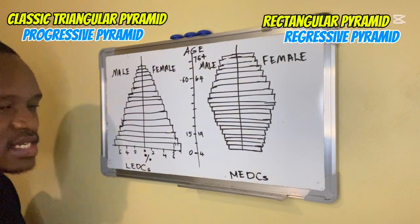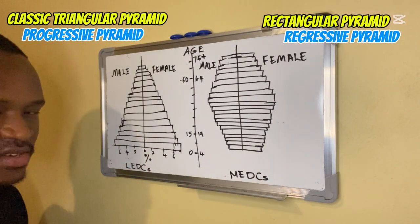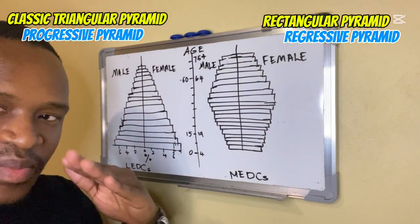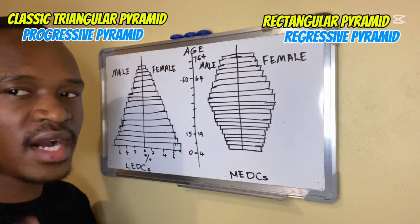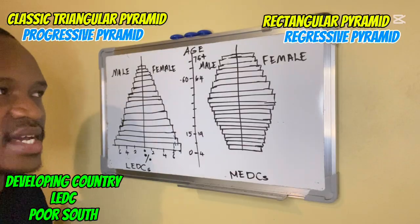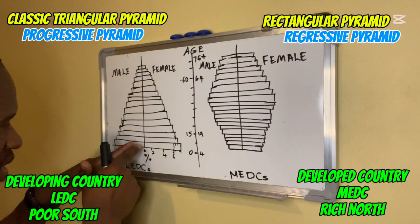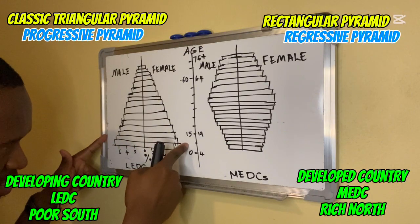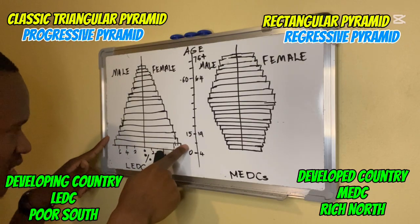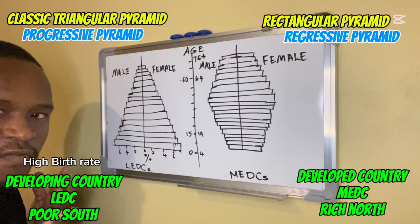The population pyramid shows us age, gender, and percentage. The classic triangular pyramid, also called the progressive pyramid, represents a developing country — an LEDC, a poor country. The rectangular pyramid represents a developed country — an MEDC. The triangular pyramid has a very broad base, showing a high birth rate, which is associated with poor countries where people lack access to or awareness of family planning.